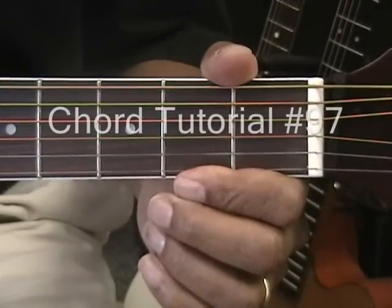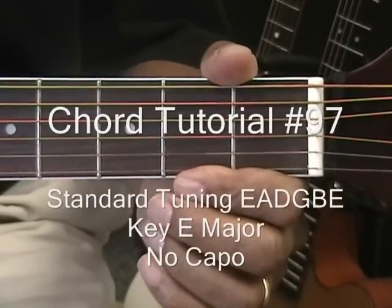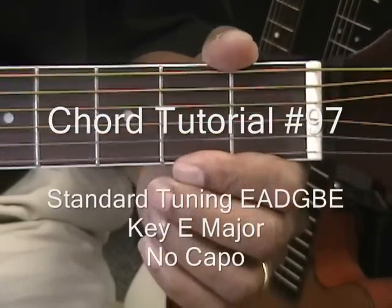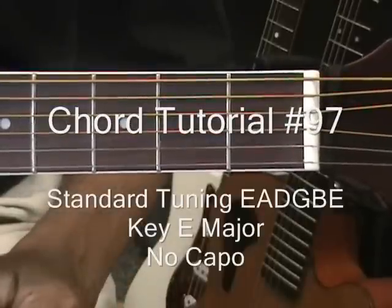Hi, and welcome to Chord Tutorial number 97. The guitar is tuned standard, E-A-D-G-B-E, and we're not using a capo.